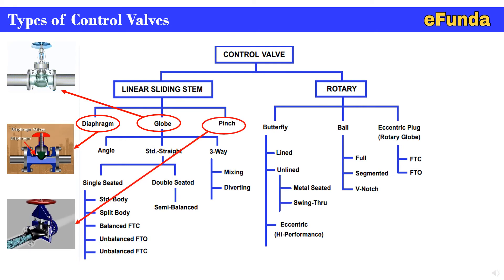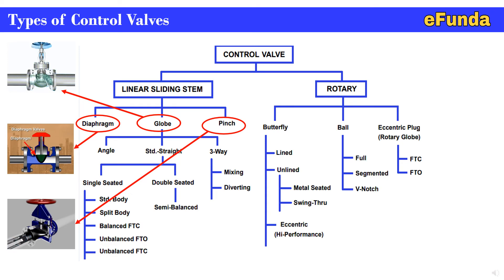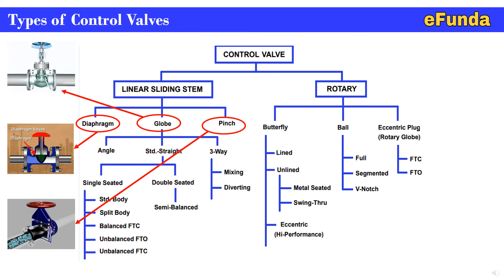The third type is the pinch type valve. One can refer to the animation showing how the flow passes through the line and how the valve is pinched at closure. Closing the valve involves pinching the elastic sleeve, thereby damming or stopping the flow. Opening and closing of the valve is realized by different types of actuators — manual, pneumatic, or electric.